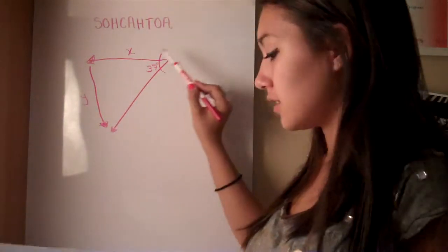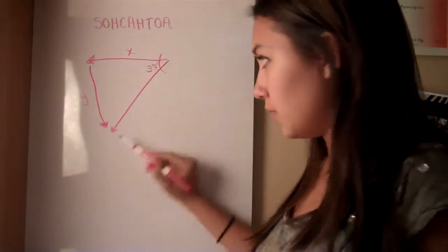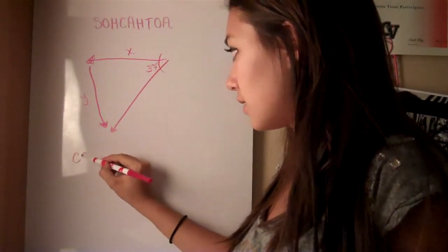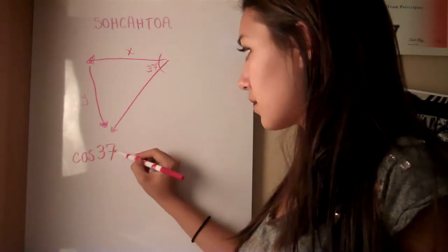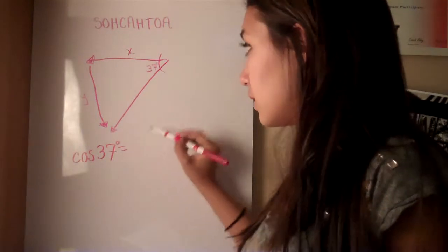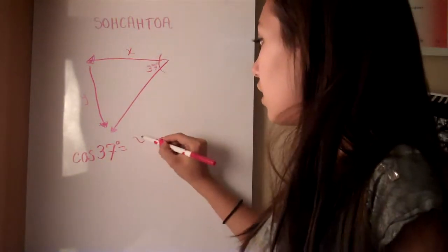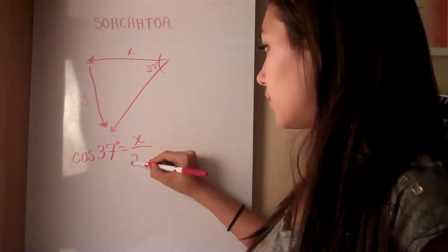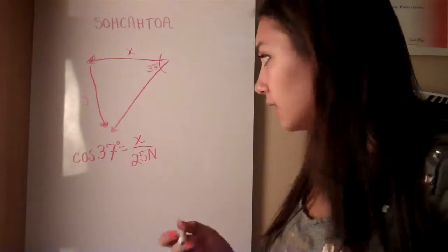So then to find the x component, you use cosine of 37 equals adjacent, so that's x, over the hypotenuse, which is 25 newtons, because they give you that in the problem.